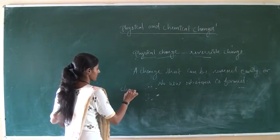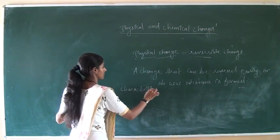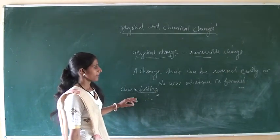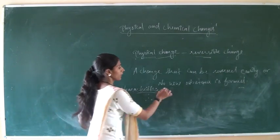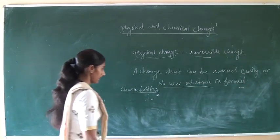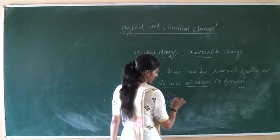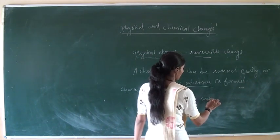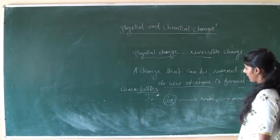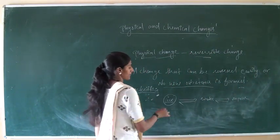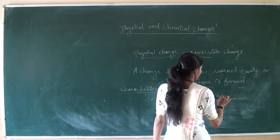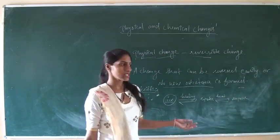Now, characteristics of physical change. The first characteristic is that no new substance is formed in physical change. For example, ice melts to form water and water is further converted into vapors. Vapors are converted back into water and water is converted back into ice. When ice is heated, we get water, and on further heating we get water vapors.